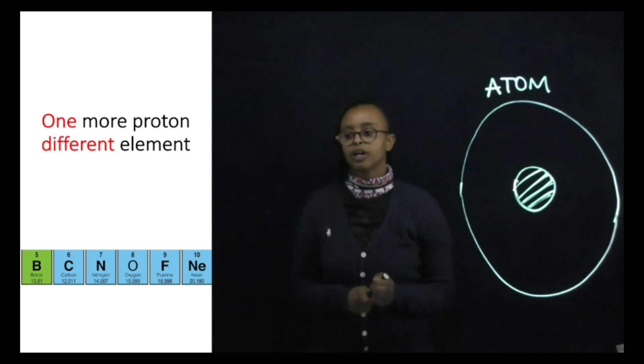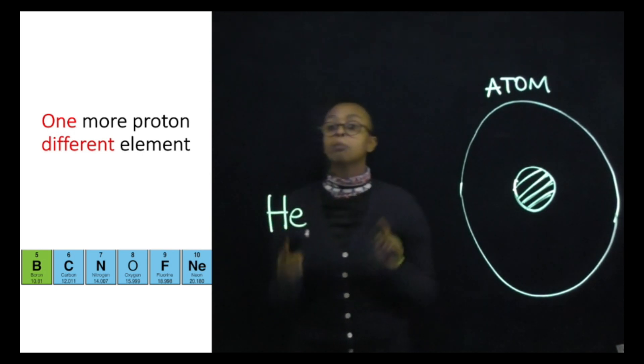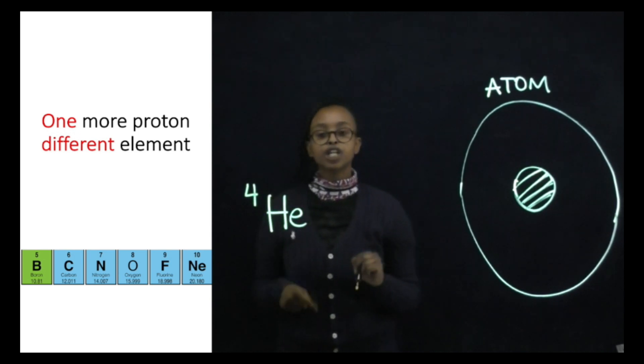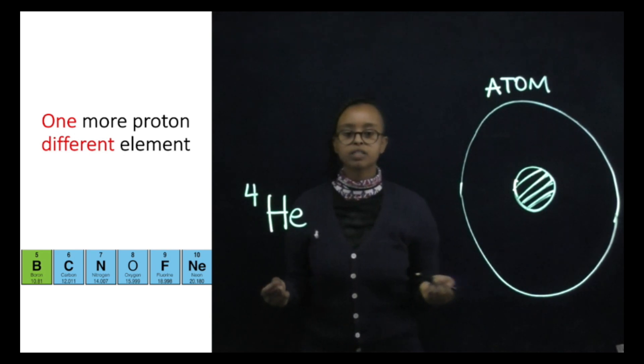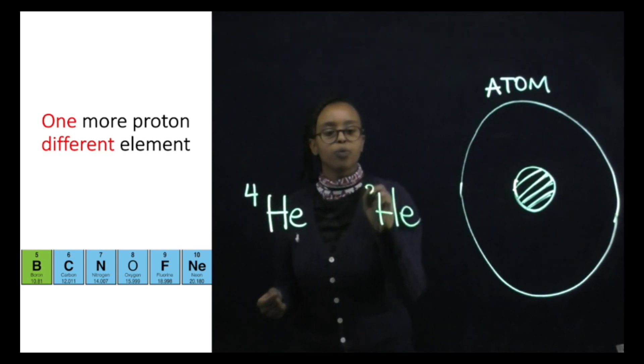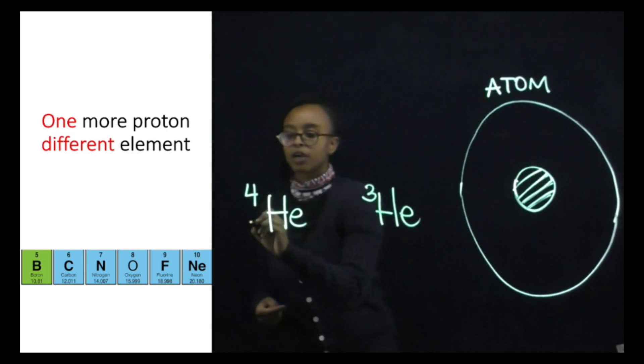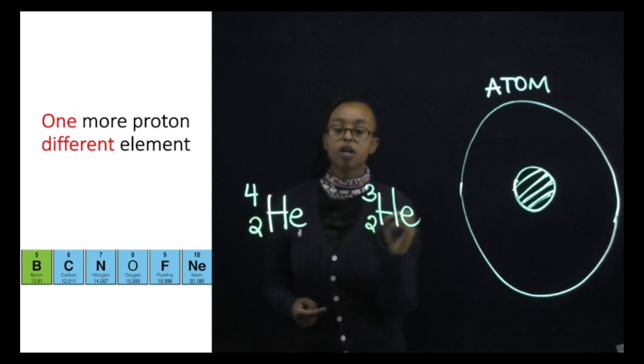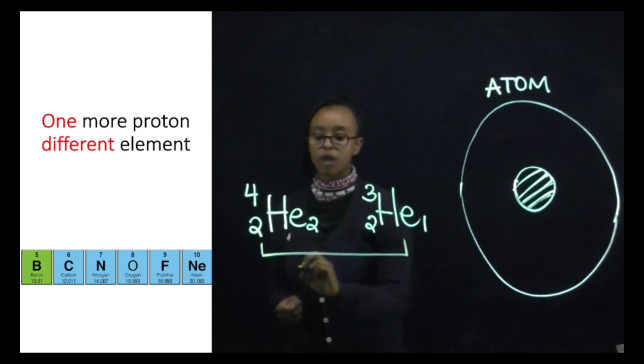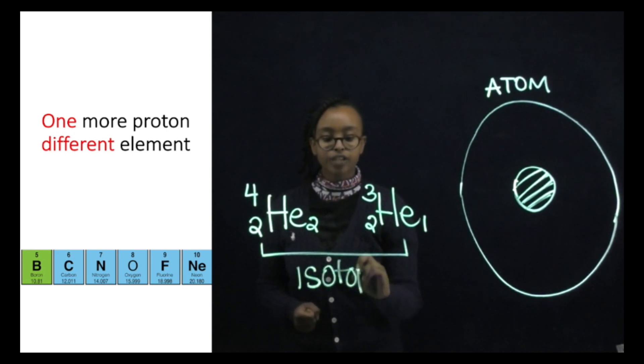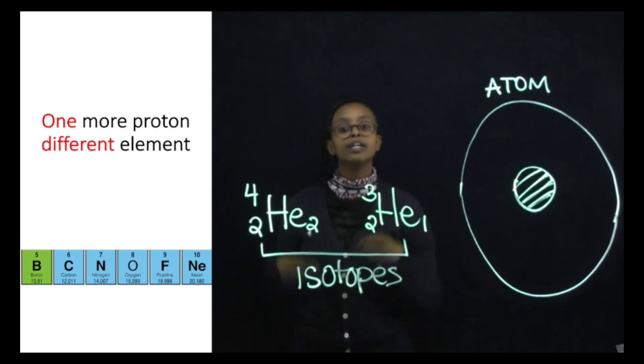But we said earlier that helium is only most commonly found with an atomic number of four. But if changing the proton number will completely change the element, a different helium element just means that there's a different number of neutrons. So this proton number will not change, but this neutron number will. These are known as isotopes. Isotopes have a different number of neutrons, same number of protons.